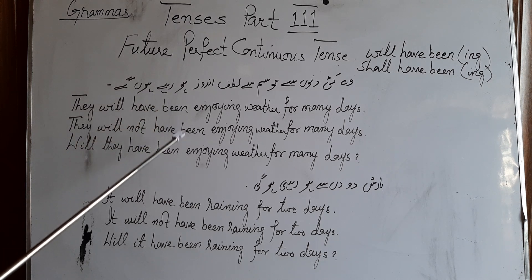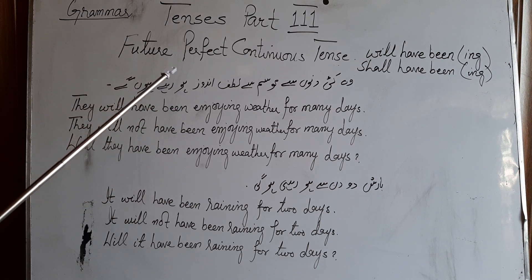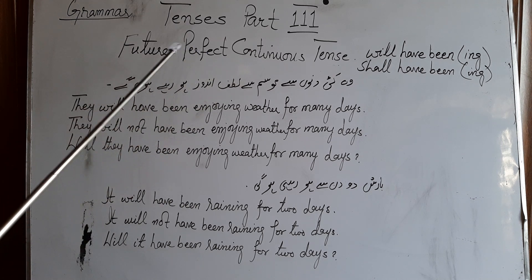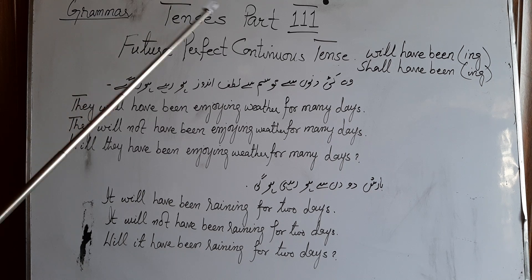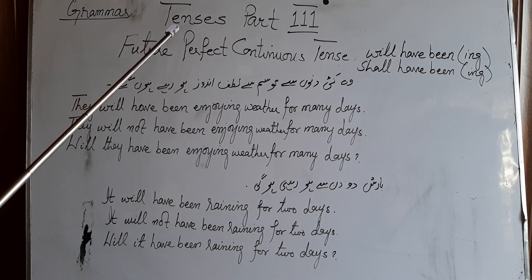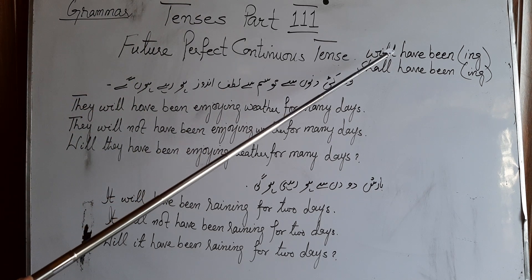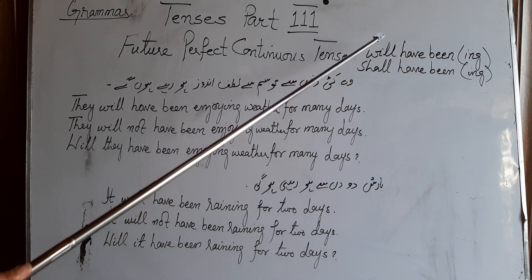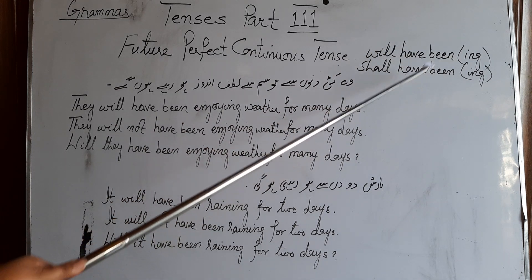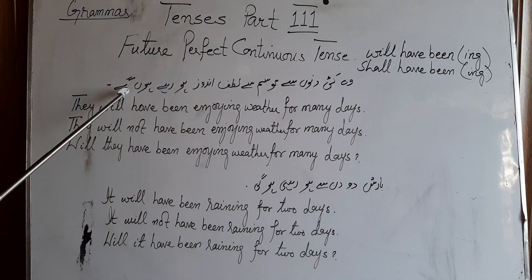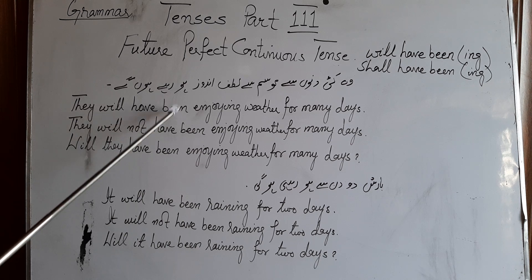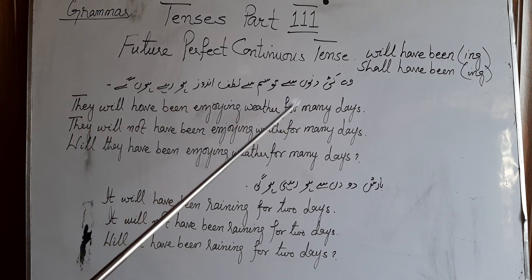The only difference is that in present perfect continuous tense we use has been and have been; in past perfect continuous tense we use had been; and in future, we use will and shall, and after will and shall: have been and ing with verb. وہ کئی دنوں سے موسم سے لطف اندوز ہو رہے ہوں گے — they will have been enjoying weather for many days.